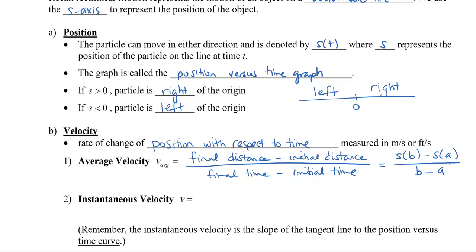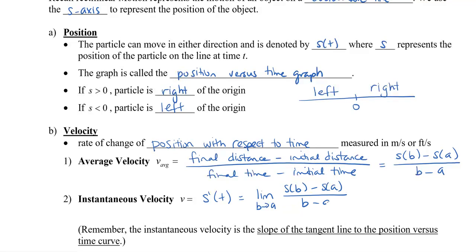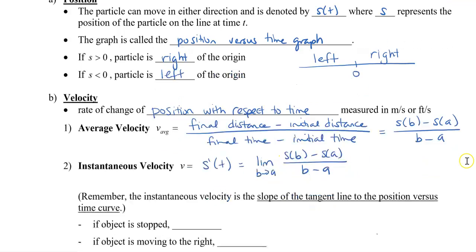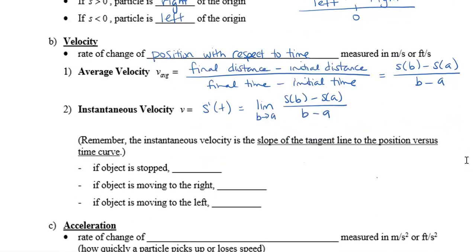Now, if I want to find the instantaneous velocity, I'm just going to call it v. That's the same as finding the derivative of the position. We can actually find the instantaneous velocity by finding the limit of this average — the limit as b approaches a of s of b minus s of a, divided by b minus a. But now that you know your derivative rules, we can actually just find the derivative very quickly and then plug in the numbers. Remember that the instantaneous velocity is the slope of the tangent line to the position versus time curve.